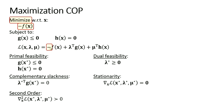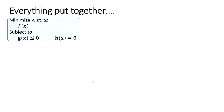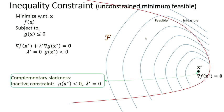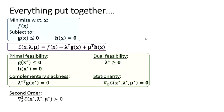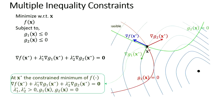The remaining point to address is why the angles between del f and the constraint gradients must be obtuse — more than 90 degrees.